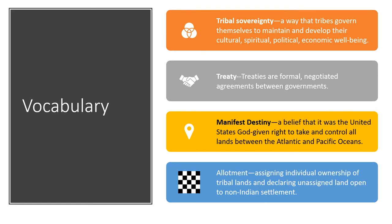Tribal sovereignty is a way that tribes govern themselves to maintain and develop their cultural, spiritual, political, and economic well-being. Treaties are formal agreements between two nations or governments. Manifest Destiny is a belief that it was the United States' God-given right to take and control all lands between the Atlantic and Pacific oceans. Allotment was a process used in the 20th century that assigned individual ownership of tribal lands, then declared all unassigned lands open for non-Indian settlement, resulting in checkerboard-like reservations with tribal and non-tribal land.